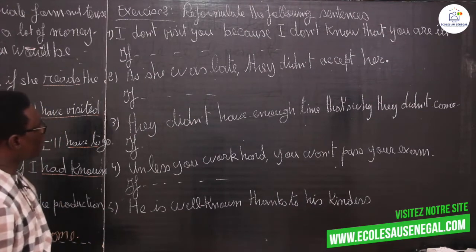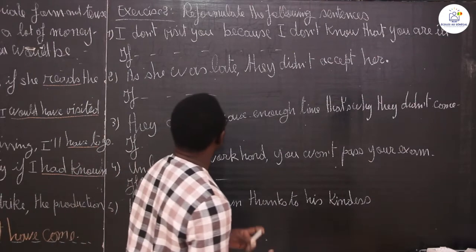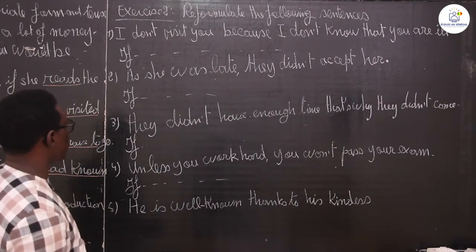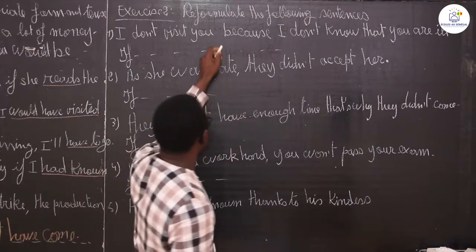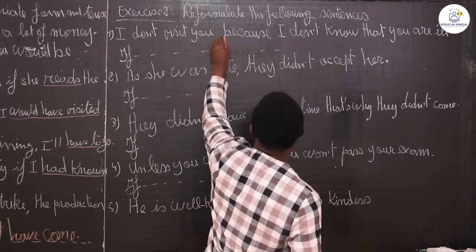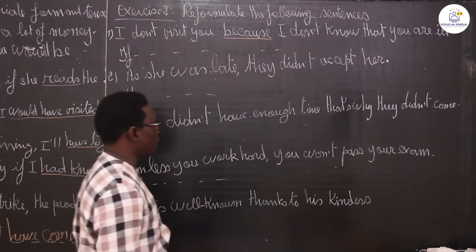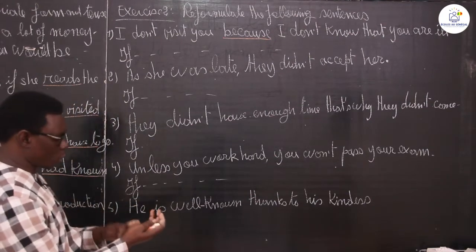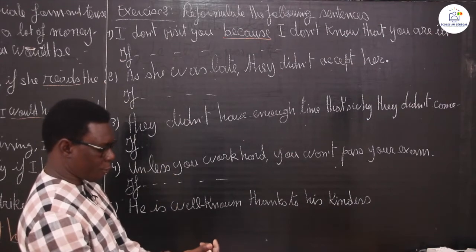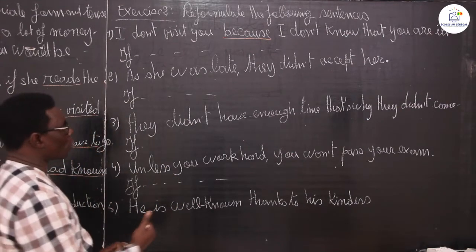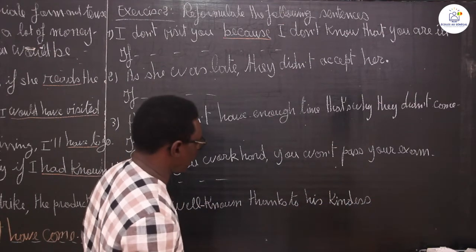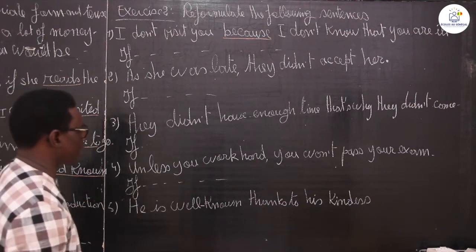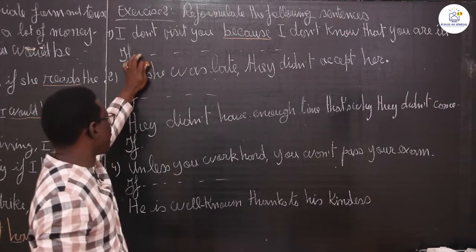Last time, when dealing with the lesson, I told you that when we deal with reformulation — if-clause — you have to pay attention on the connecting words, as you have it here: 'because'. We said last time that when the connecting word is 'because', 'because of', 'as', or 'since', the cause is always on the right. So when the cause is on the right, when reformulating a sentence, the cause becomes on the left.